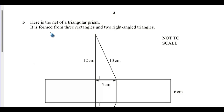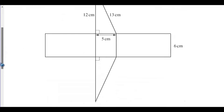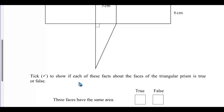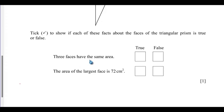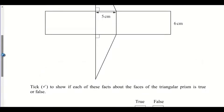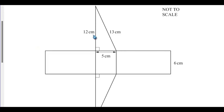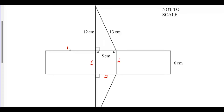Question 5: Here is the net of a triangular prism formed from three rectangles and two right-angled triangles. We need to show if certain facts about the faces are true or false. The first fact is that three faces have the same area. Looking at the net, we have dimensions 12, 13, and 5. This place will also be 5, and these sides will be 6. The side 12 centimeters long will match the corresponding side on the prism.